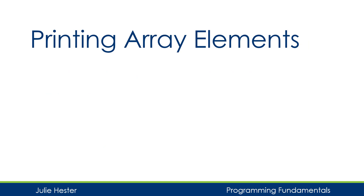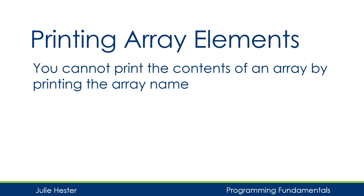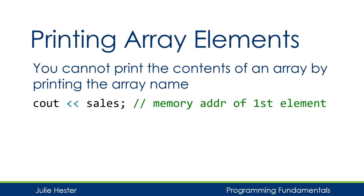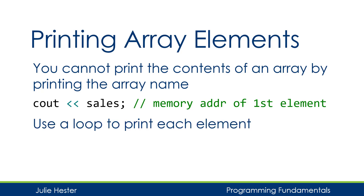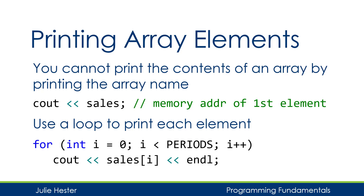Now what if we want to display the array elements? One thing we're used to doing is just saying cout and the name of our variable. However, when we're working with arrays, we can't do that — we can't just display the name of the array. If I were to put this line of code in my program, when it executes it would actually display the memory address of the first element in the sales array, which is not what I want to see. Instead, I need to use a loop to print each element one by one. So I'm going to have a for loop with the same for loop header, but this time I'm just displaying the value on the screen: cout sales subscript i.